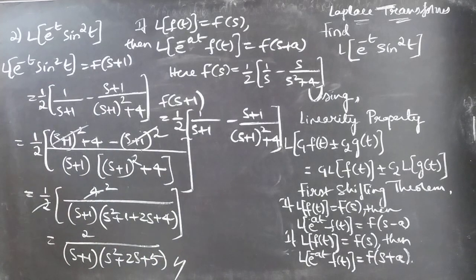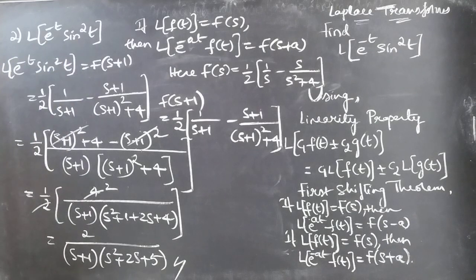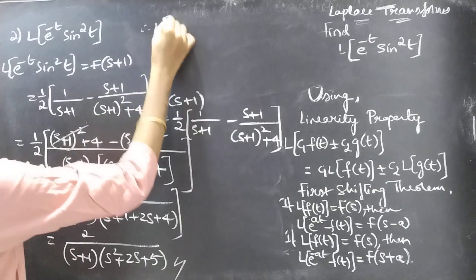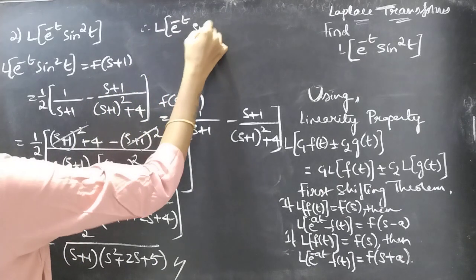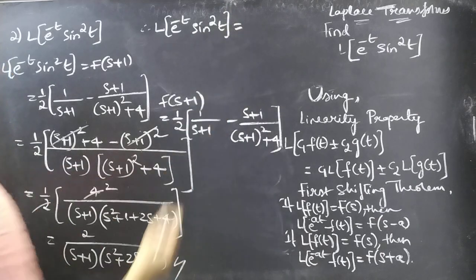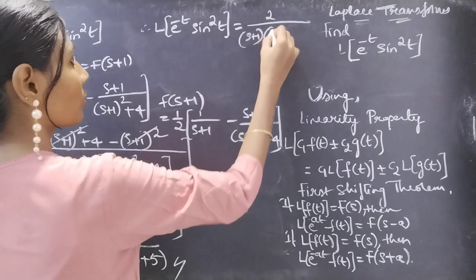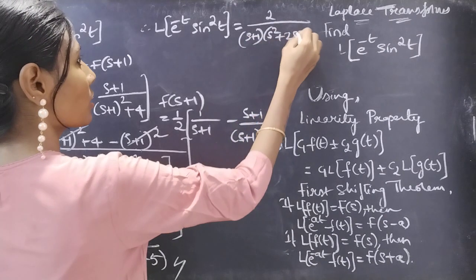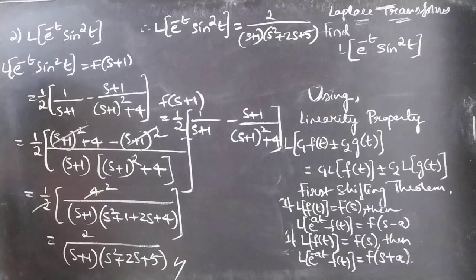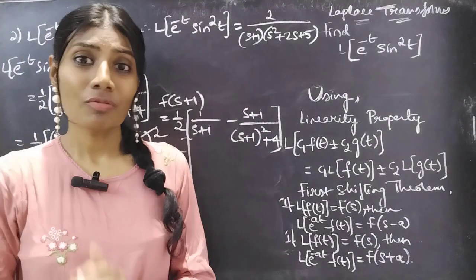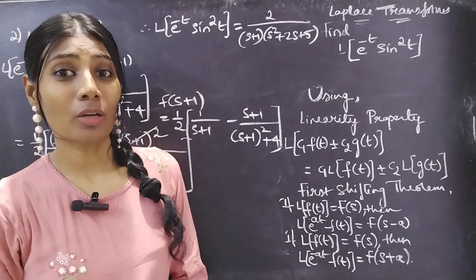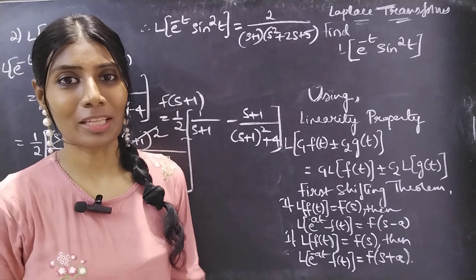You got the same answer. Therefore L of e to the power minus t sine squared t equals 2 by (s plus 1)(s squared plus 2s plus 5). This completes the problem. So we have seen a problem from Laplace transforms in this video. I hope you'll understand. We'll see you in the next video. Until then, bye bye.